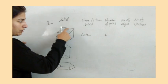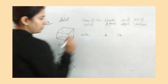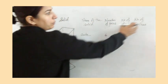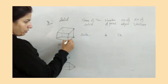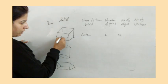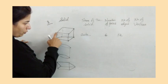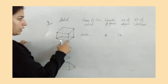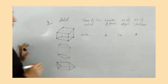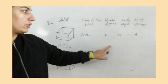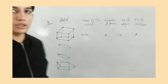The number of edges: one, two, three, four, five, six, seven, eight, nine, ten, eleven, and twelve — twelve edges, means twelve sides. The number of vertices: one, two, three, four, five, six, seven, and eight.